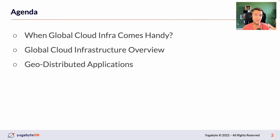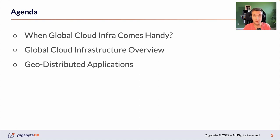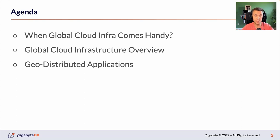The agenda for today will include three primary topics. We need to understand why this whole conversation makes sense at all — we will see how the global cloud infra can be used to solve several problems related to geodistribution. Next, we will remind ourselves of how the global cloud infrastructure looks like. And after that, we will see how to use this cloud infrastructure to solve those problems while we are building geodistributed apps.